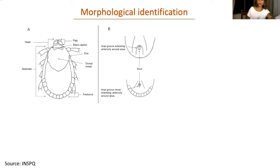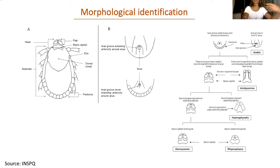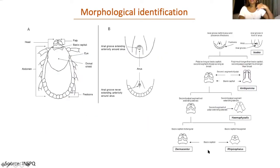For morphological identification, you look at specific criteria on your arthropod and, depending on whether features are present, absent, or their shape, you narrow it down to a species using morphological keys. This is a very simplified key for tick identification — you start with the position of the anal groove: if it's in front, it's an Ixodes; if not, it's something else. You keep going through characters until you reach a species. A proper morphological key goes all the way down to species level. It seems simple, but it's actually quite challenging.